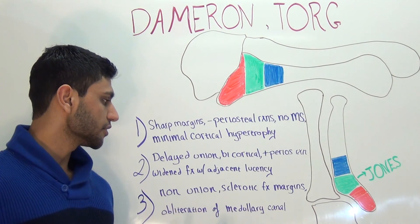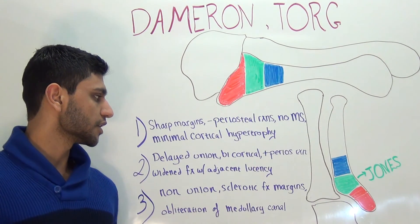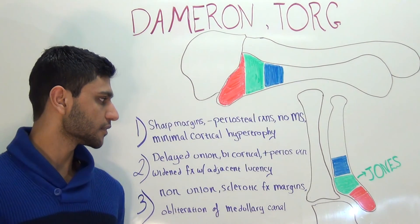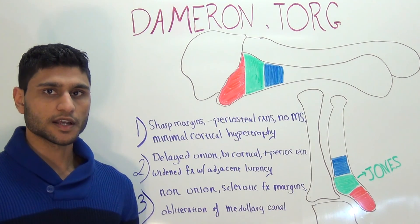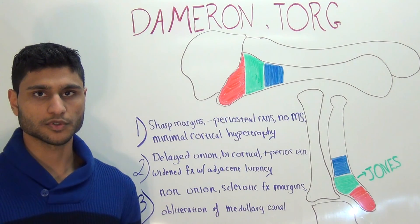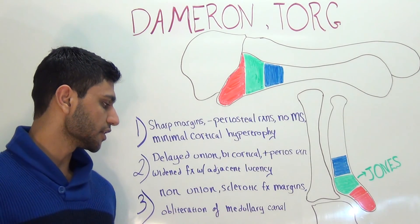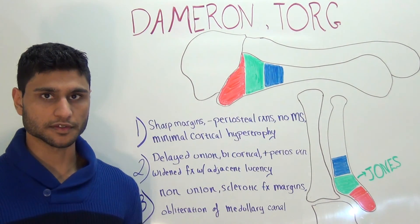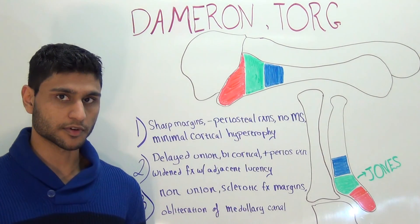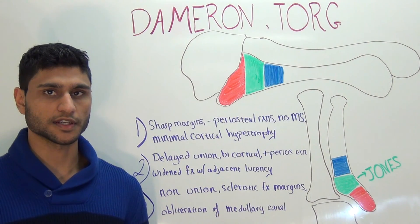A type 2 is essentially a delayed union. On radiograph, you will see that oftentimes both cortices are affected. There is periosteal reaction, and surrounding the fracture line is an area of radiolucency, which represents bone resorption. A type 3 is really just a non-union. On x-ray, you will see sclerotic fracture margins and complete obliteration of the medullary canal.